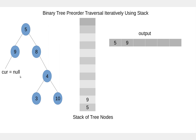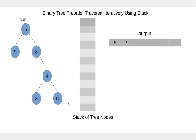Now the node is null, so we pop the node — which is 9 — so current points to node 9, and then we move to the right child of 9. Current is again null, so we pop this node from the stack, so current becomes 5, and we move to the right child of 5. Node 8 is not null, so we process 8 first.